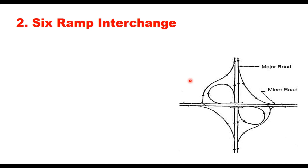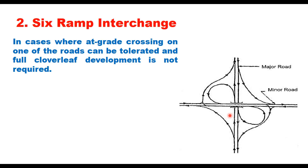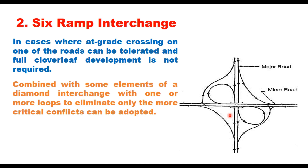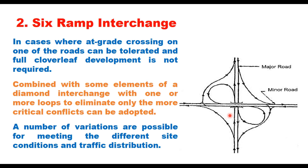The second type is the six-ramp interchange. It has four outer connections for left-turning traffic and two loops for right-turning traffic. The two loops can be in opposite quadrants, on the same side of the road, or in other configurations depending on which right turns need to be facilitated. Where at-grade crossings on one road can be tolerated and full cloverleaf development is not possible, the six-ramp interchange is the best choice. It can be combined with elements of a diamond interchange to eliminate only the most critical conflicts.